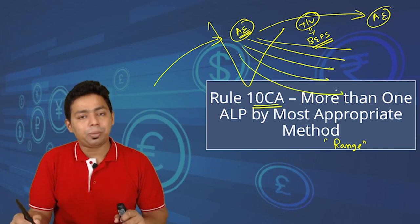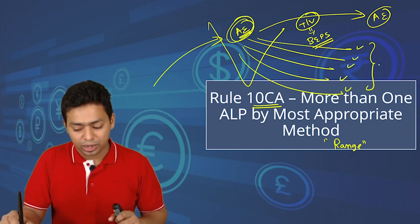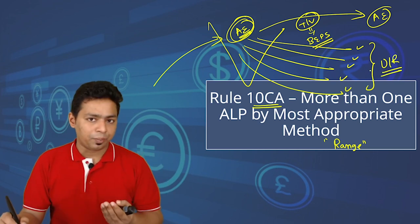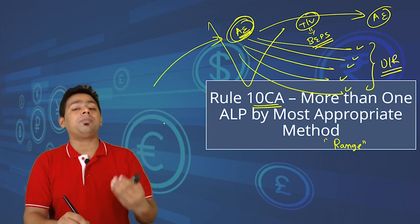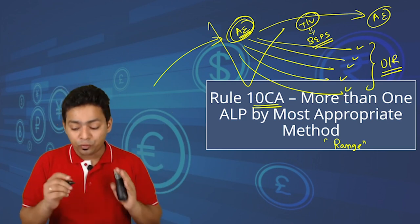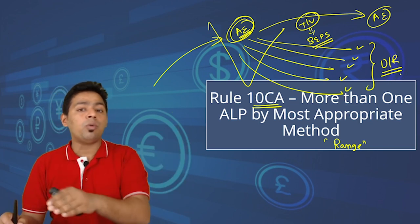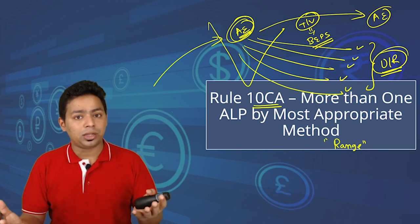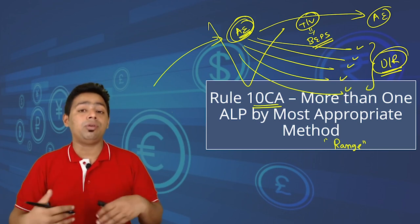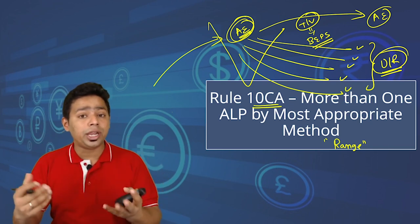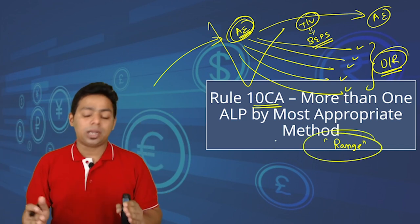When applying the CUP method, you often get multiple data points — not just one. If there is only one unrelated data point, we directly compare. If there are two, three, or four, we take the simple arithmetic mean. If the data set has up to five entries, we take the average. But if there are six or more transactions, using the arithmetic mean may not give us a valid result, so we apply the range concept to make the data more comparable and sensible.